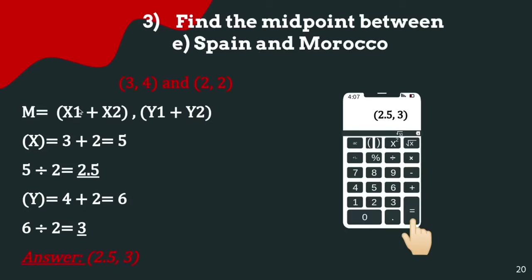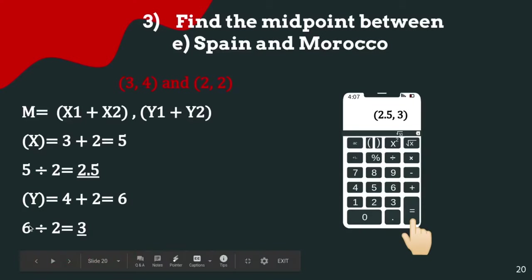Find the midpoint between Spain (3, 4) and Morocco (2, 2). Using the midpoint formula: x = (3 + 2)/2 = 5/2 = 2.5, and y = (4 + 2)/2 = 6/2 = 3. The overall answer is (2.5, 3).